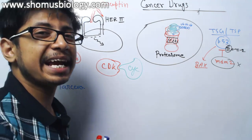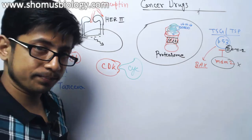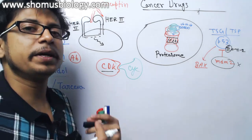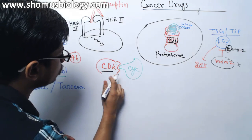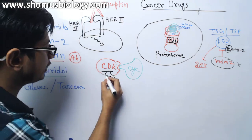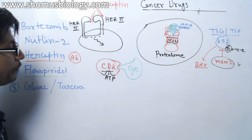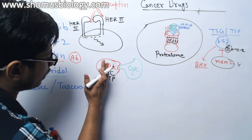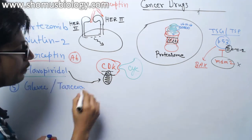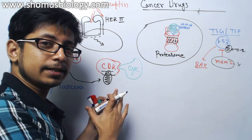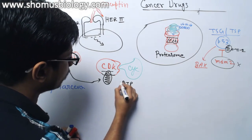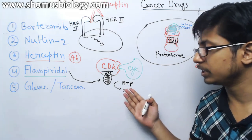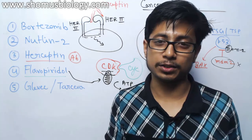CDK's job is to phosphorylate other proteins, and for this it needs ATP as a phosphate donor. CDK has a specific site where ATP binds to continue the signaling process. Flavopyridol interacts with the ATP-binding pocket of CDK instead of ATP, so ATP cannot bind. As a result, even when the CDK-cyclin complex forms, it remains inactive because there is no ATP and therefore no phosphate donor — that is how flavopyridol works.